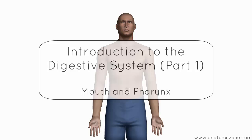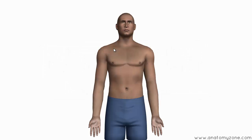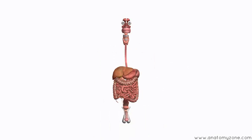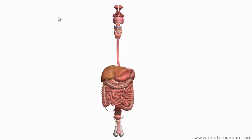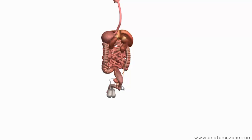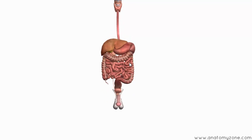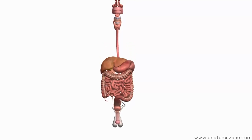This is a tutorial to introduce you to the digestive system. The digestive system is essentially a long tube, which is about 6 meters long and it runs all the way from the mouth right down to the anus. You can see how this tube is folded in this abdominal area, which increases the surface area for absorption of nutrients.